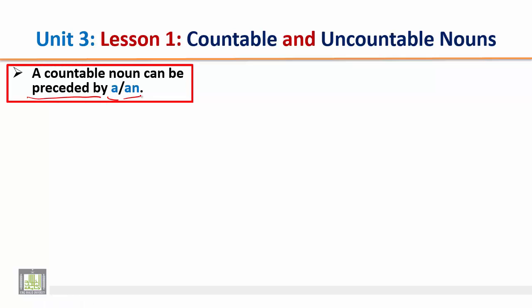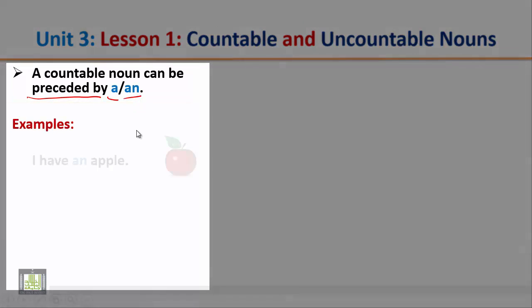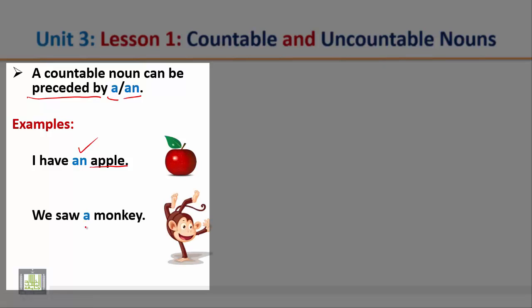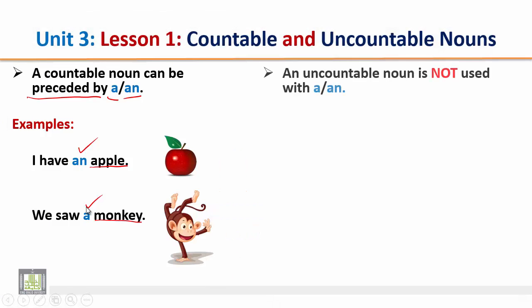A countable noun can be preceded by 'a' or 'an.' Examples: 'I have an apple' — the word 'apple' is a countable noun, so it can be preceded by 'an.' Another example: 'We saw a monkey' — the word 'monkey' is a countable noun, so it can be preceded by 'a.'